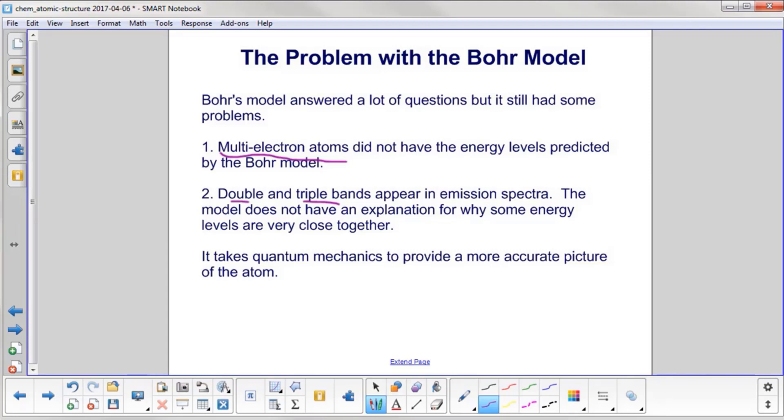differing by the difference between n equal 1, n equal 2, n equal 3. There shouldn't be these triple bands and double bands. So we need something new. And that's what Quantum Mechanics provides.